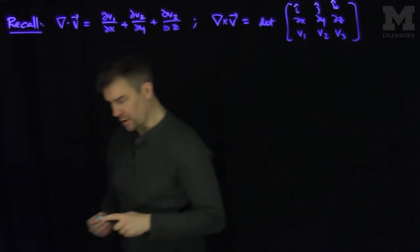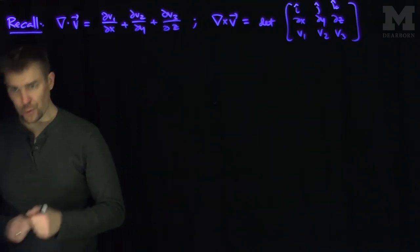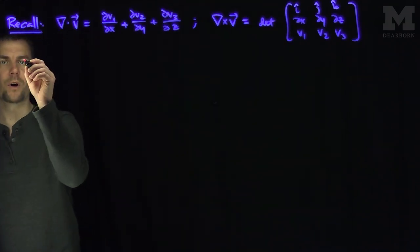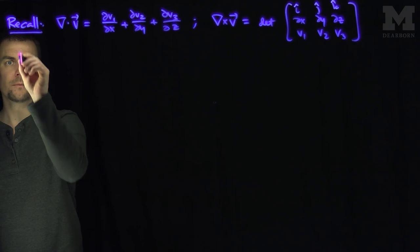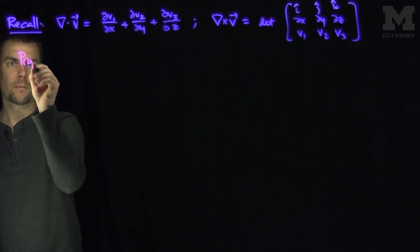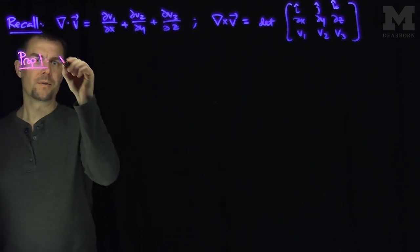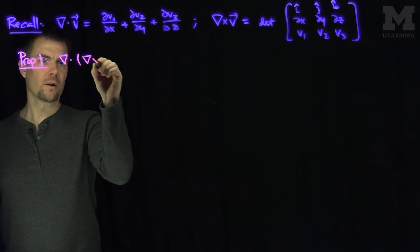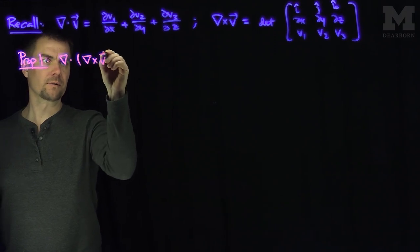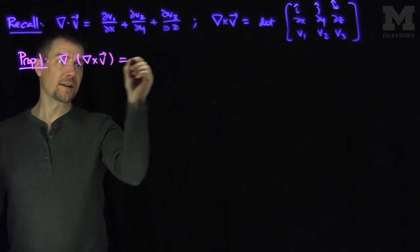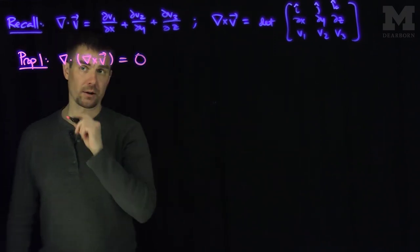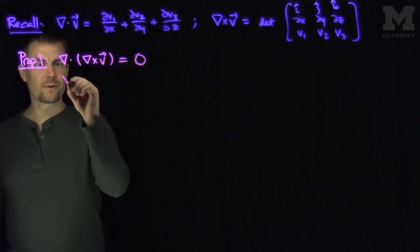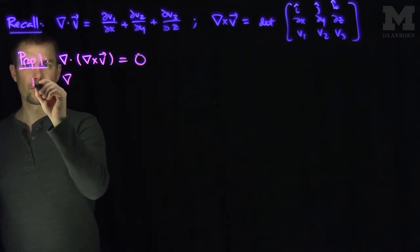The first identity we're going to look at is we're going to compute the divergence of a curl. Identity 1, Proposition 1: the divergence of the curl of a vector field equals the zero scalar. So let's see why. Here's the proof — we have the divergence of the curl.